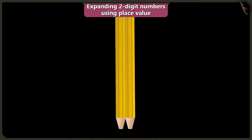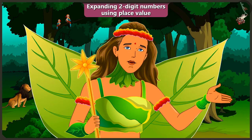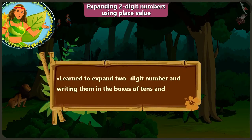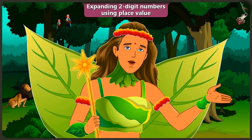Very good. So children, in this video you have learned to expand two-digit numbers by using place value, which means writing in the box of tens and ones. Now in the next video, we will understand expanding two-digit numbers using place value through examples in a better way.